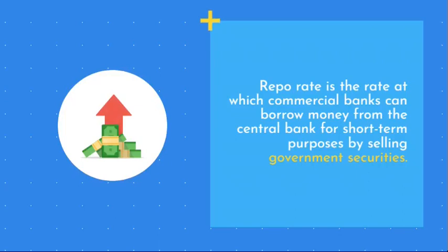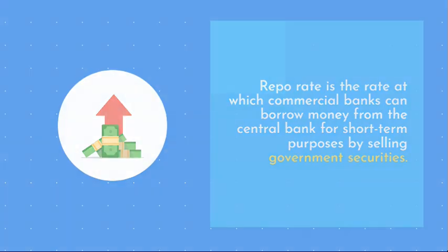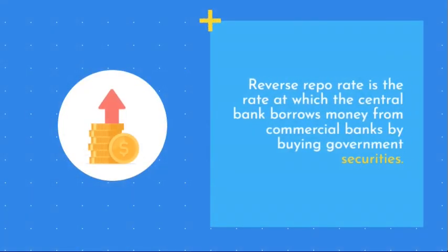Repo rate is the rate at which commercial banks can borrow money from the central bank for short-term purposes by selling government securities. Reverse repo rate is the rate at which the central bank borrows money from commercial banks by buying government securities.